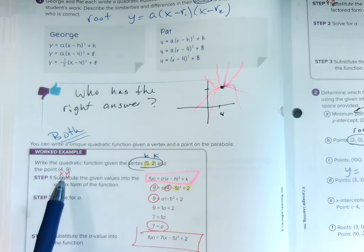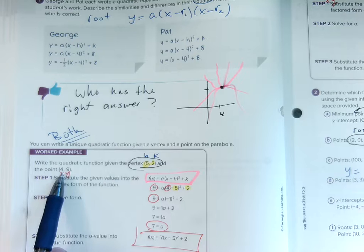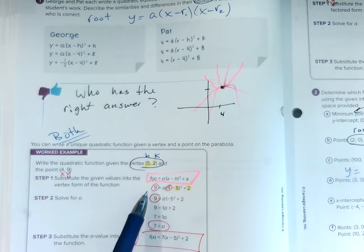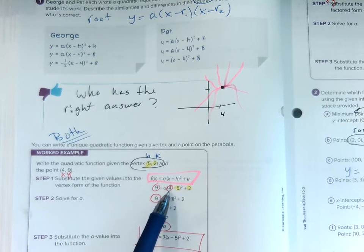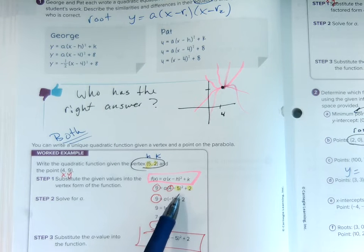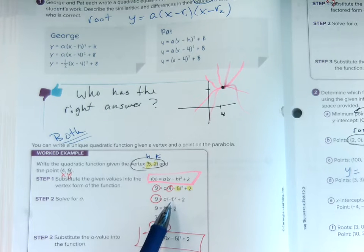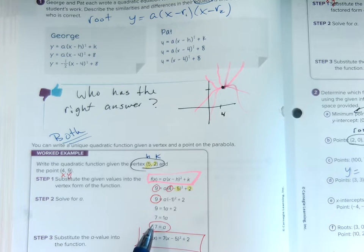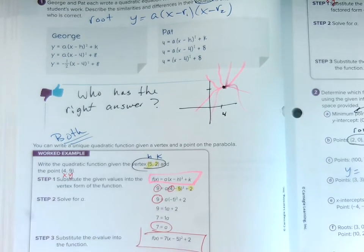So we found more information. We have a point. It goes through (4, 9). 9 is a y value, 4 is an x value. We simplified. We got 1, negative 1. We squared negative 1. We got 1. We subtracted 2. We got a to be 7. If a is 7, we put the 7 right back into its form. So we rewrite the equation as 7 times (x minus 5) plus 2. Because that's my vertex.